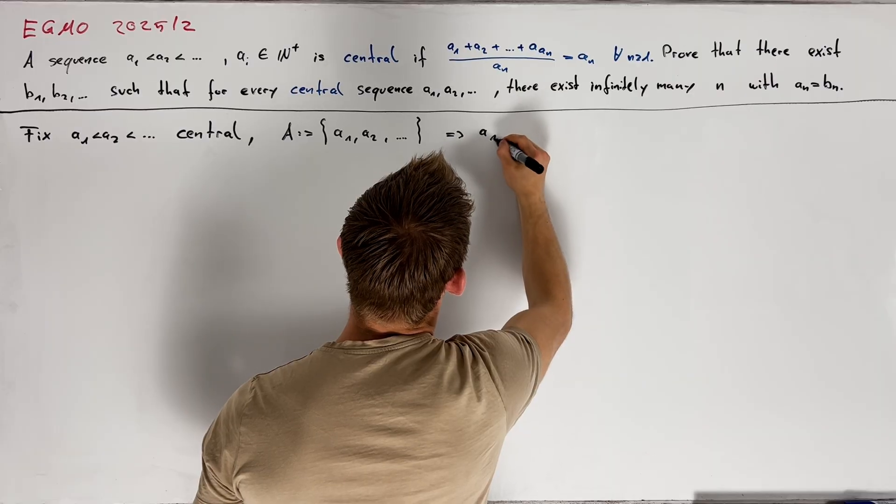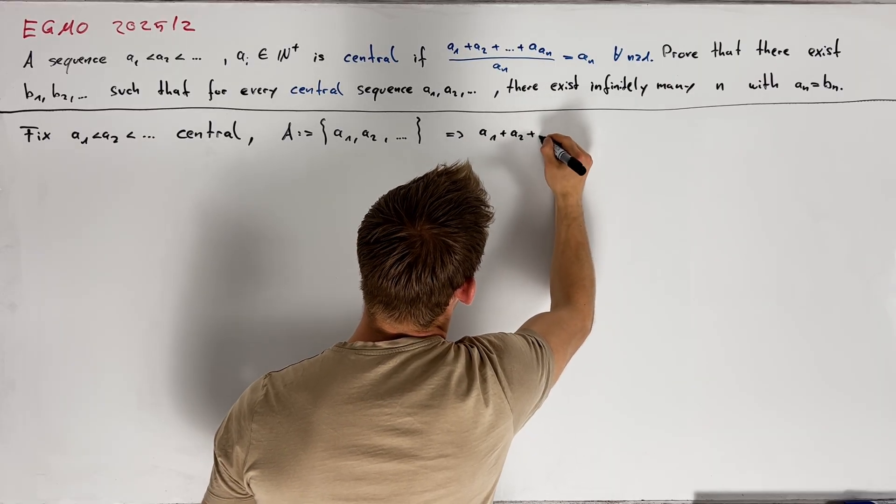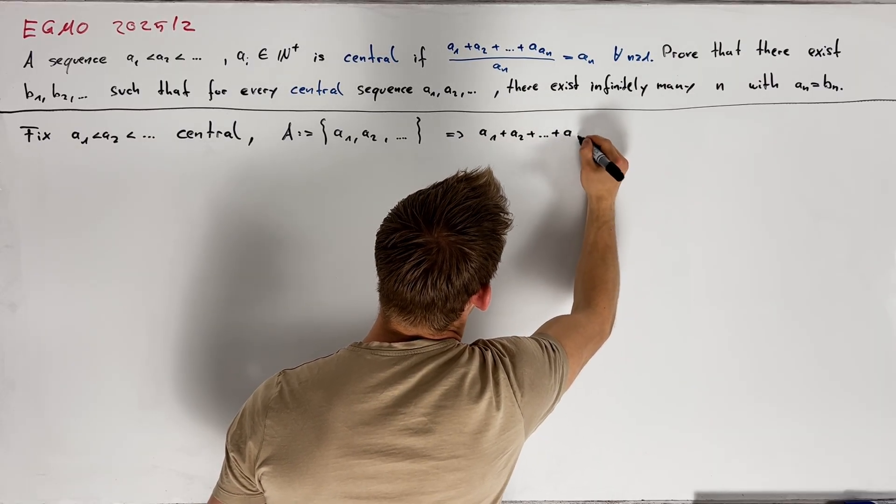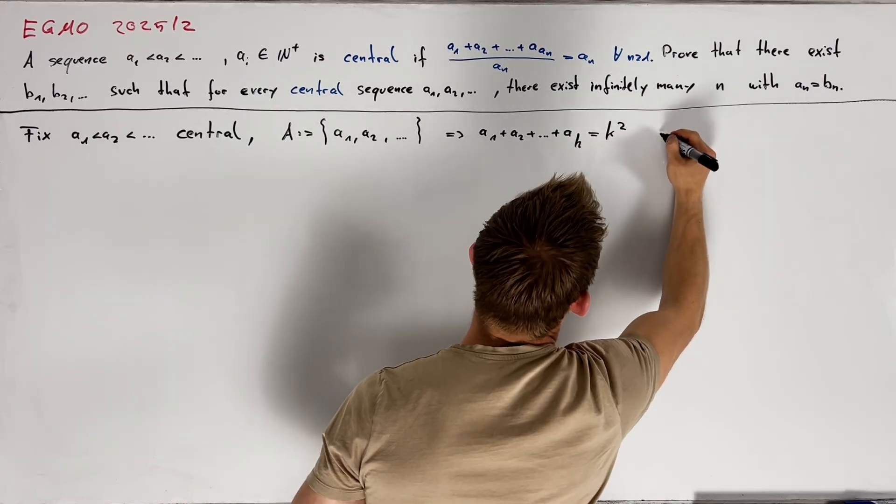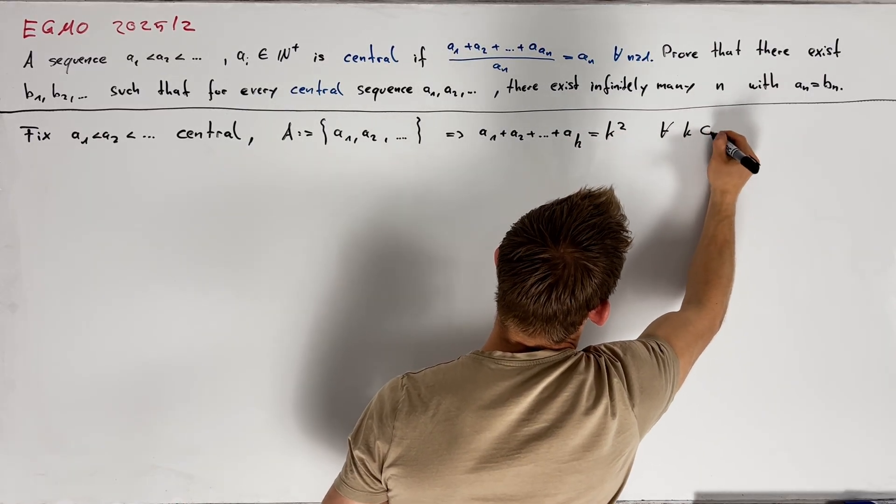This allows us to rewrite our condition on central sequences, namely we can write that a1 plus a2 and so on plus ak is equal to k times ak for all k in A.